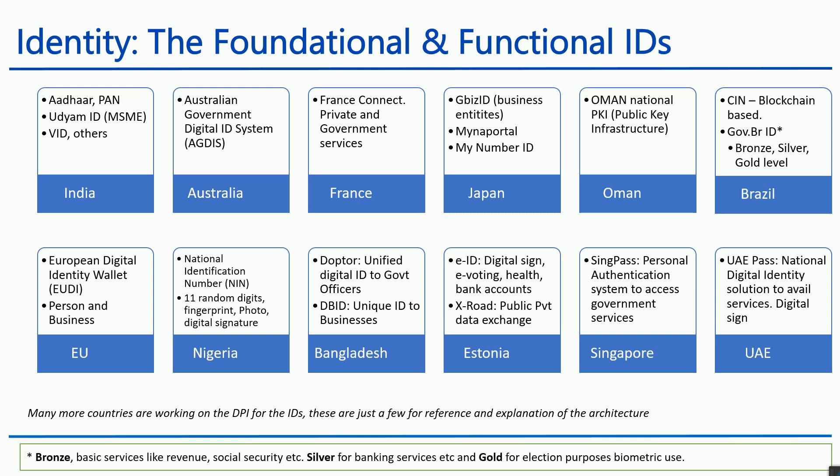In Brazil, there is the CIN — Citizen Identification Number — which is a blockchain-based identity system. They also have a government.br ID with three layers: bronze, silver, and gold. Bronze level covers basic services like revenue and social security; silver is for banking services; and gold is for election purposes and uses biometrics.